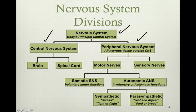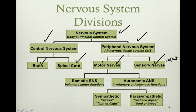In the central nervous system, we have the brain and spinal cord. In the peripheral nervous system, we have motor nerves and sensory nerves — sensory nerves are essentially input, and motor nerves are essentially output. The motor nerves have two more subdivisions: the somatic nervous system, which is voluntary, and the autonomic nervous system, which is involuntary.